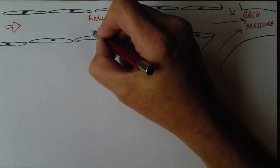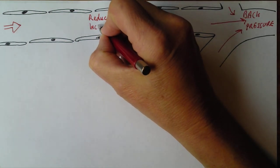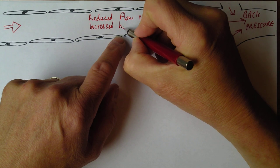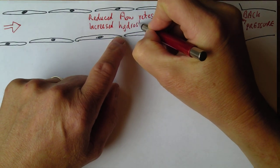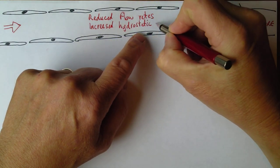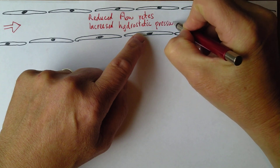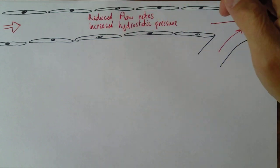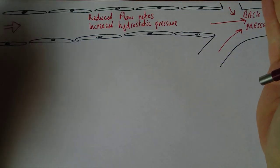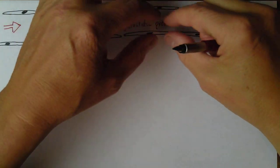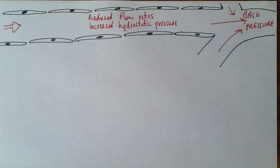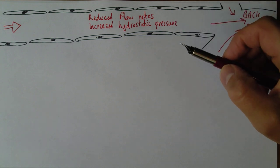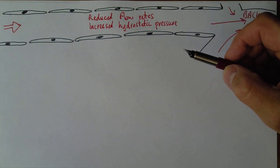The reduced flow is also going to increase the hydrostatic pressure — the blood pressure within the vessel. Because the blood can't get out, there's going to be effective congestion of blood within the vessel. So we've got reduced flow rates and increased hydrostatic pressure.